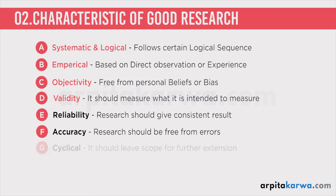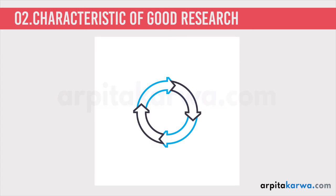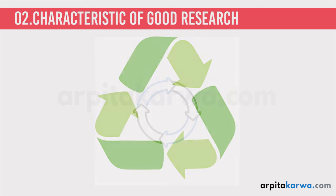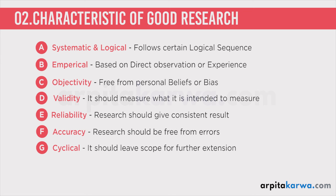The next characteristic is that research is cyclical — like a cycle, where it ends there is a new beginning. Once you reach the end of a research, there should always be scope for a new beginning. Research should always be open-ended, leaving scope for further extension. Even if I have researched the people of Dharavi, there are things I have not measured, and someone else can measure those next.